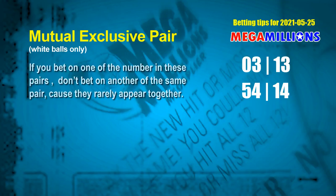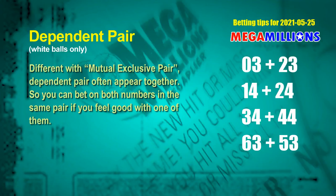Besides the best numbers we found for you, if you'd like to pick some numbers through the following units digit rule yourself, here are some tips to increase hit odds. Mutual exclusive pairs: these numbers both match the following ones rule, but according to hundreds of results before, they rarely appear together. If you bet on one, don't bet another in the same pair. The white ball mutual exclusive pairs for the next draw are: first pair 03 and 13, second pair 54 and 14.